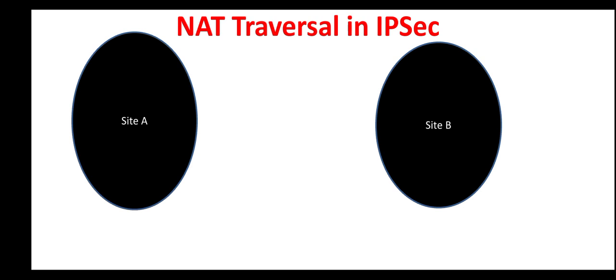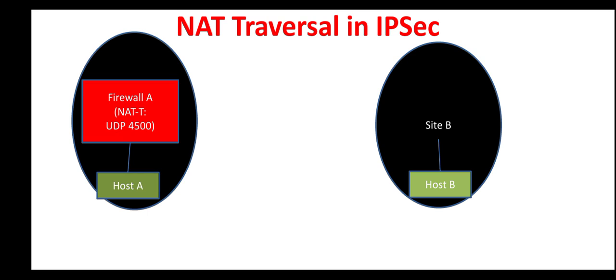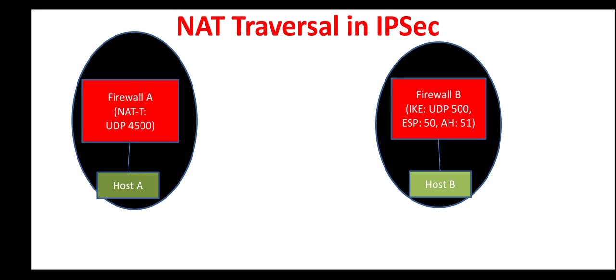There are two sides, each with a machine and a firewall. The network between these two sides is the internet with NAT, therefore it is an untrusted network and we have to establish our IPsec VPN between these two sides. Additionally, host A is using a private IP, so we also have to perform NAT — therefore we have to use NAT traversal over IPsec.